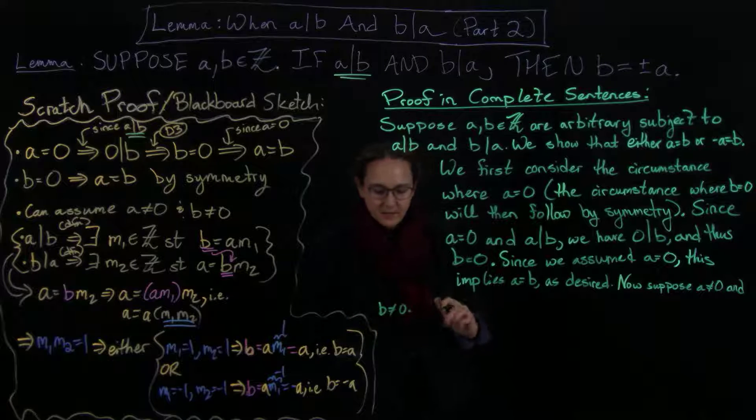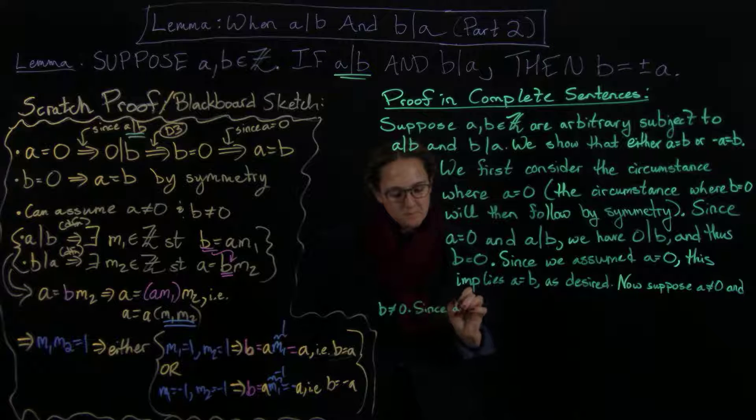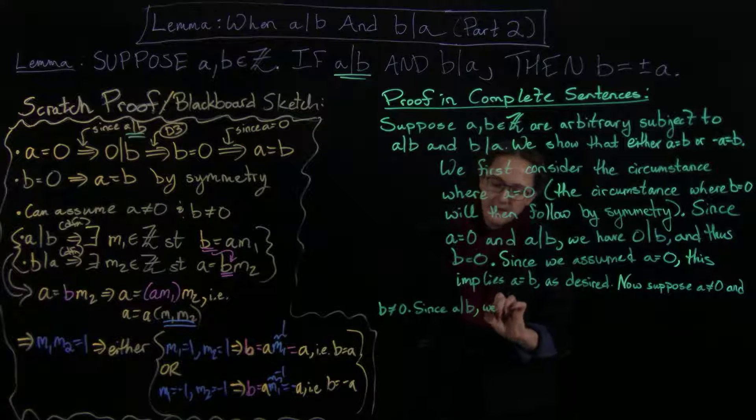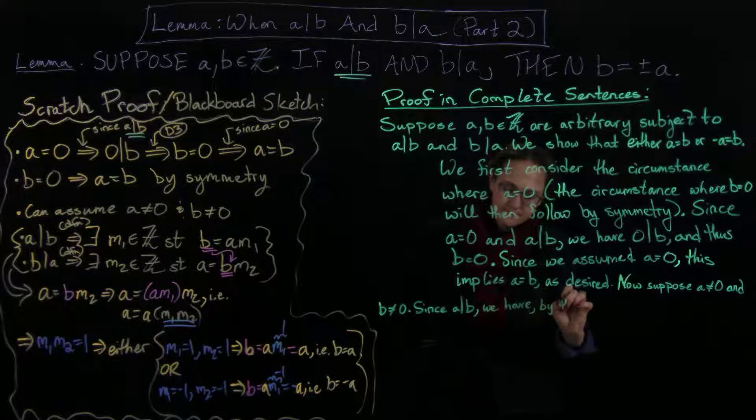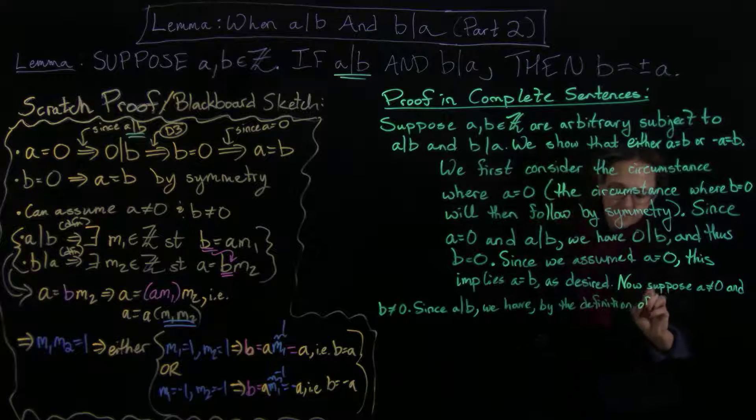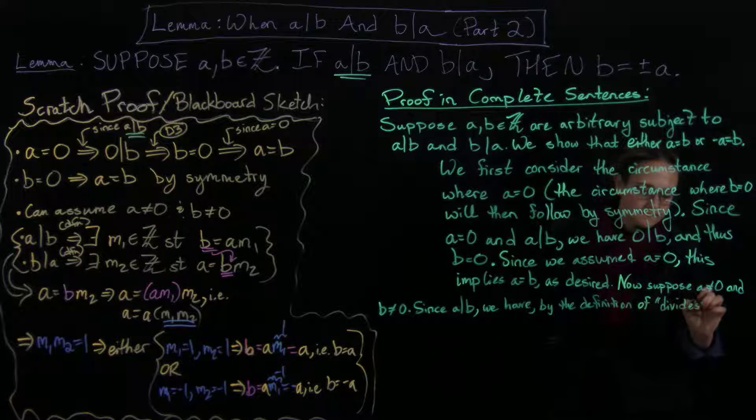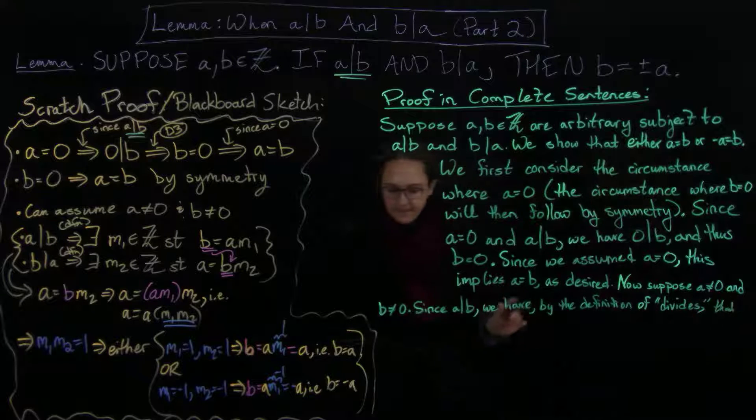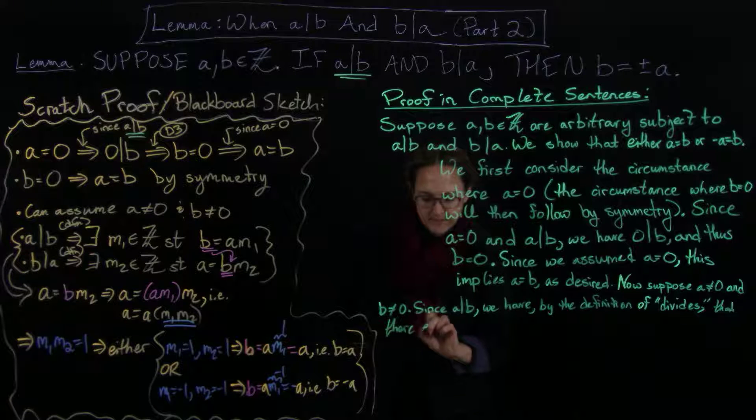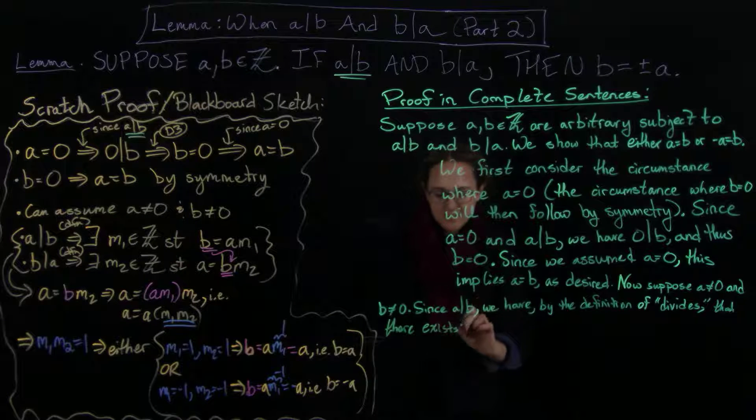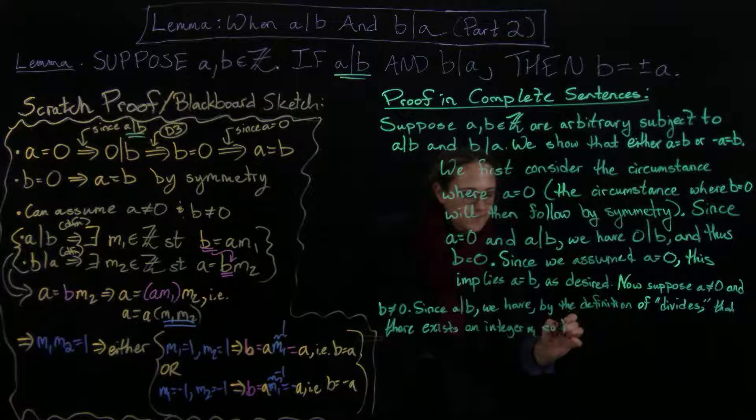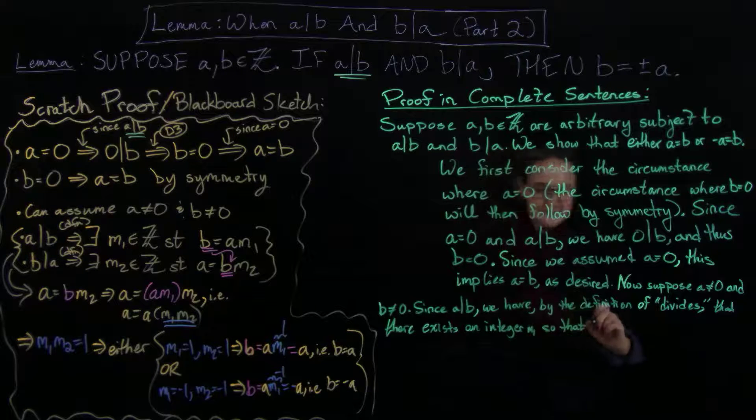So since a divides b, we have by the definition of divides that there exists an integer m1 so that I have b equals a times m1.